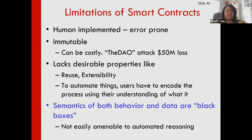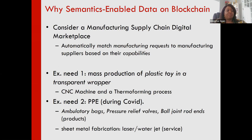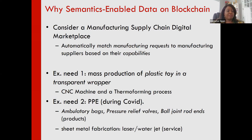The blockchain itself doesn't understand the data or behavior in a smart contract — it's just bytecode — so it's not amenable to automated reasoning. Here's why automated reasoning matters: think about manufacturing supply chains during COVID, where people were looking for manufacturers of PPE. There was a need for a marketplace to match manufacturing requests to suppliers based on supplier capabilities.